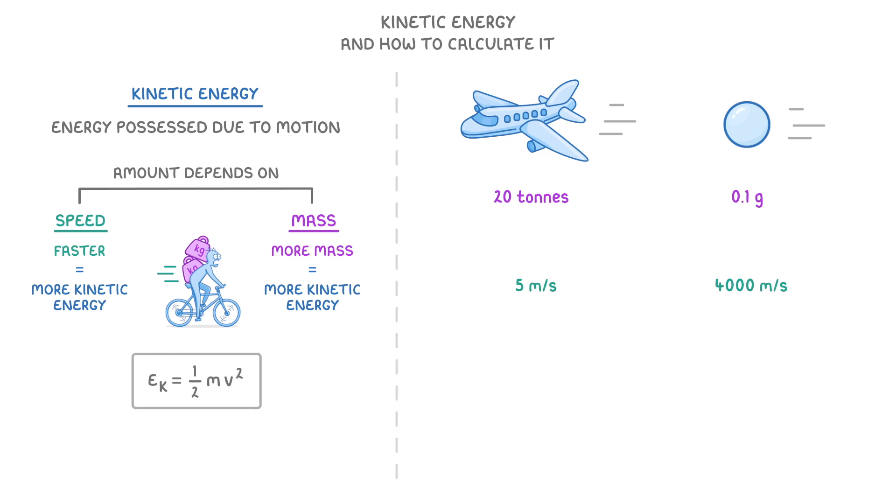which states that Ek equals one half mv squared. If you're not familiar with this equation, the E stands for energy, and the little k means it's kinetic energy.